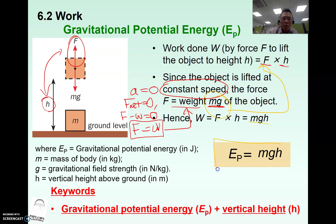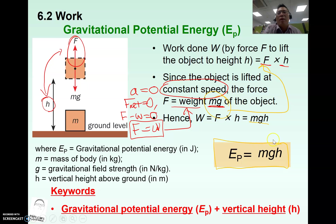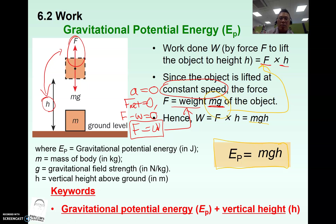Rearranging the formula, force applied equals weight. The force is what we call weight, which is mg. Substituting mg back into the work done equation gives us what we call gravitational potential energy — GPE equals mgh. All variables must be in SI units to get energy in joules.